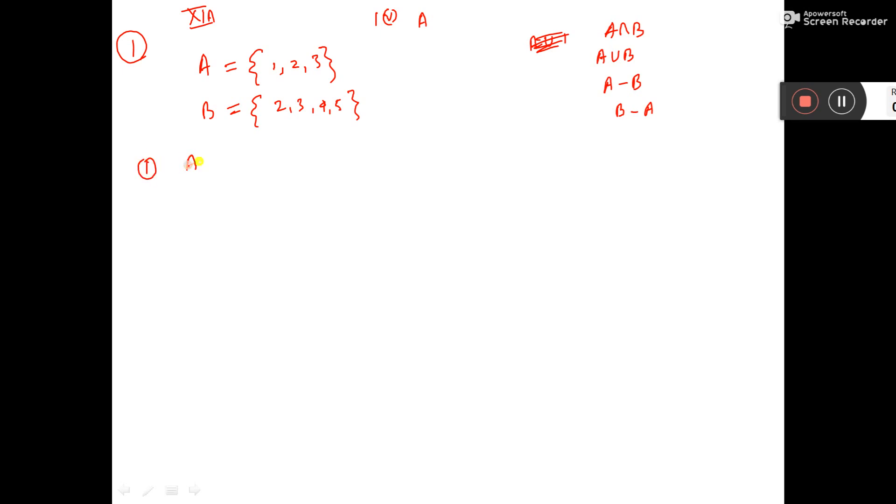Now let us find number 1, A intersection B. How to write A intersection B? This 1, first you say, it is not there, so you will not take.